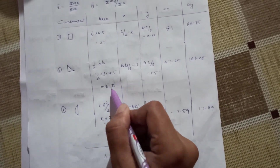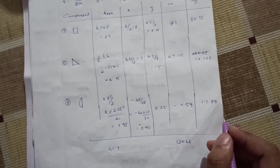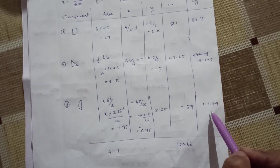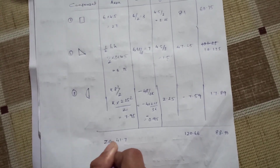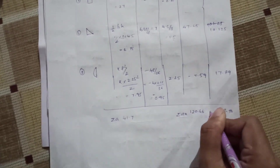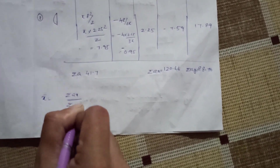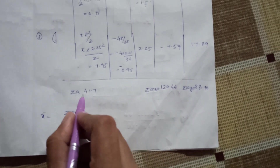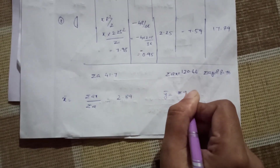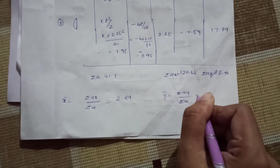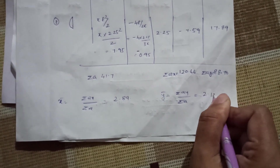For the y-direction: 6.75 × 1.5 = 10.125. Summation of Ay is 88.76 mm³. Now applying the formulas: x̄ = ΣAx / ΣA = 120.66 / 41.7, and ȳ = ΣAy / ΣA = 88.76 / 41.7 = 2.128 mm.